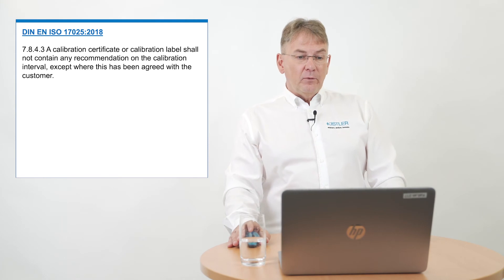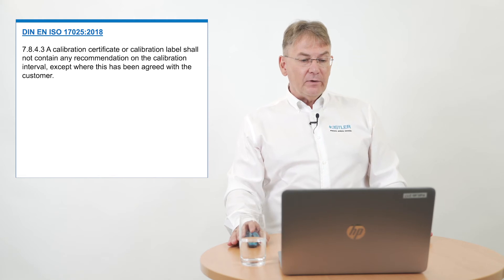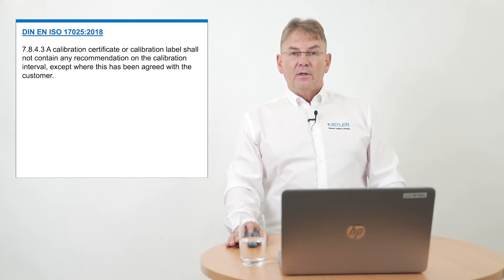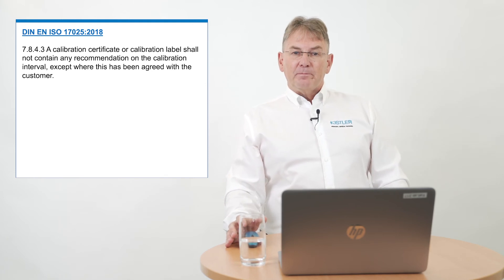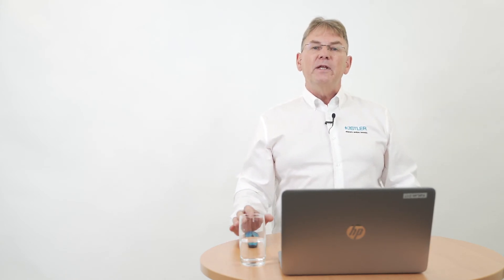Another point written in this norm is that a calibration certificate shall not contain any recommendation of the calibration interval. The interval is part of your — the customer's — quality management system. You are responsible for your interval, so no calibration laboratory can give you one. But the norm continues and says 'except where this has been agreed with the customer.' So if you tell the calibration laboratory to include an interval of 12, 24, or other months, that would be acceptable. The laboratory itself may not give you an interval on its own.